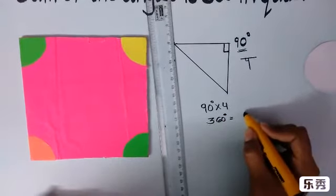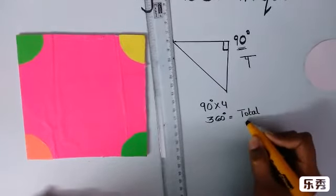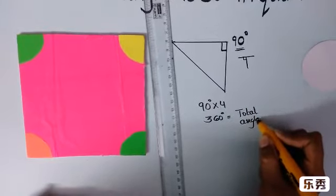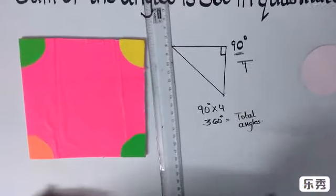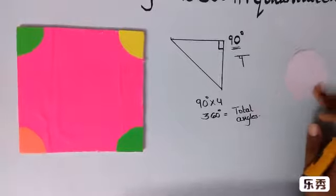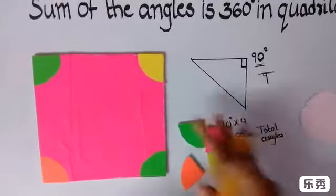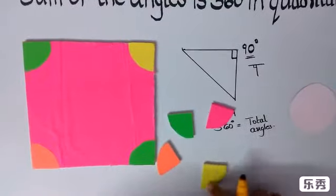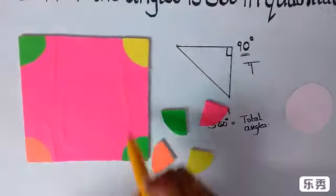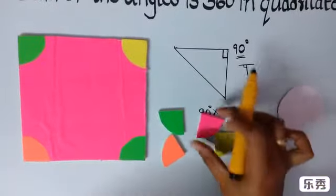It is the total angles. This is the theoretical way. Now we will just see in a practical way. Here I have cut some of the corners. See, these four corners and the pieces are here. We will just join them.